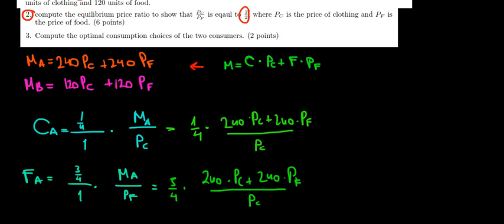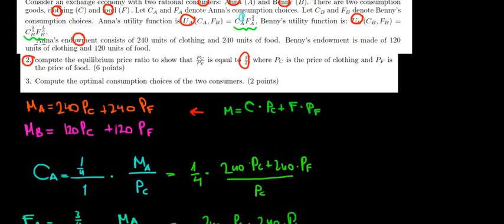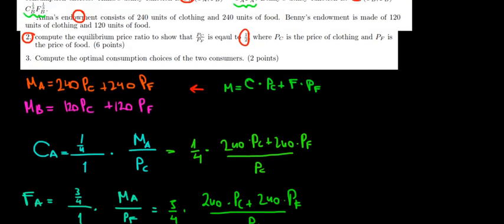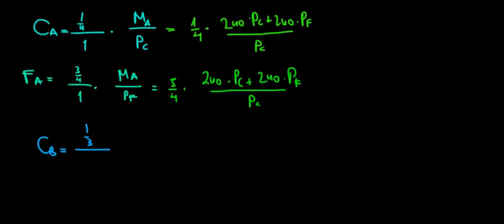Now let's do the same for Benny. Benny has a different income and different exponents, so let's take that into account. For Benny, 1 over 3 is spent on clothing. Benny's clothing consumption equals 1 over 3 divided by the total, which is 1 over 3 plus 1 over 3 equals 2 over 3, times Benny's income divided by the price of clothing.